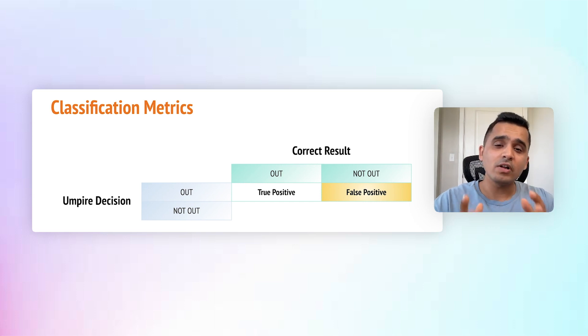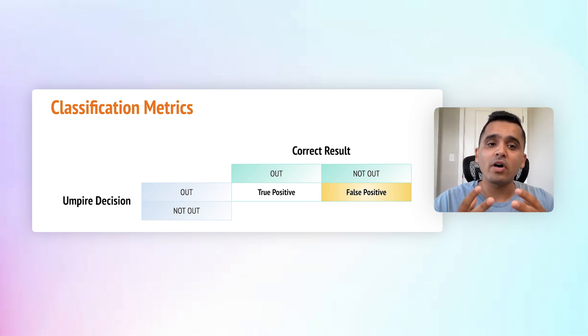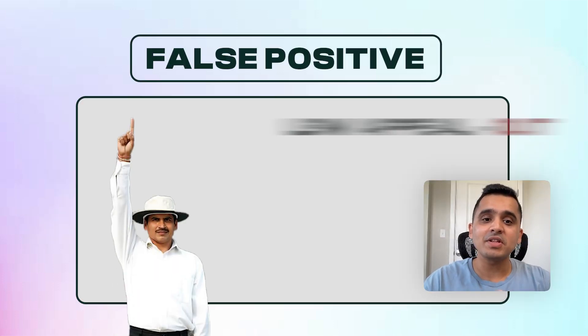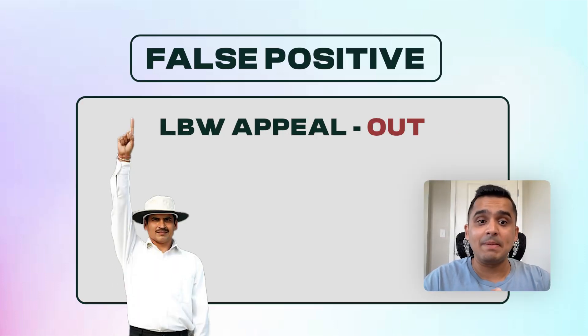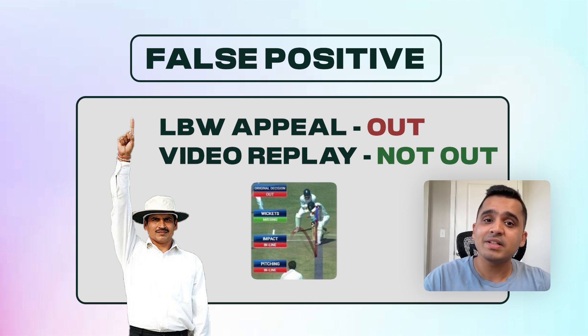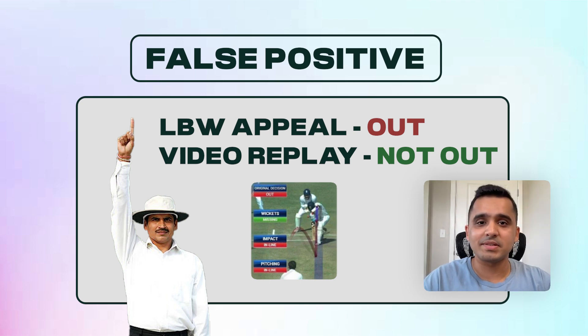A false positive is when the umpire wrongly declares a player out. For example, an umpire gives out on an LBW appeal, and the DRS video replay reveals that the ball is missing the stumps.